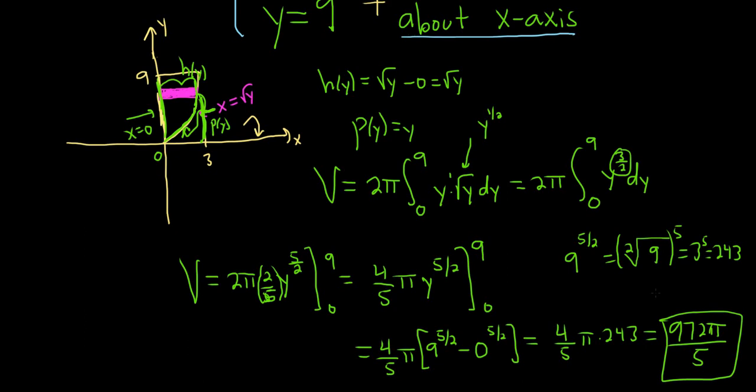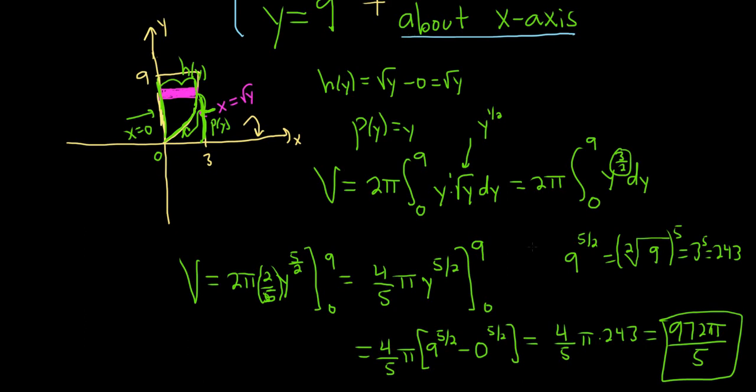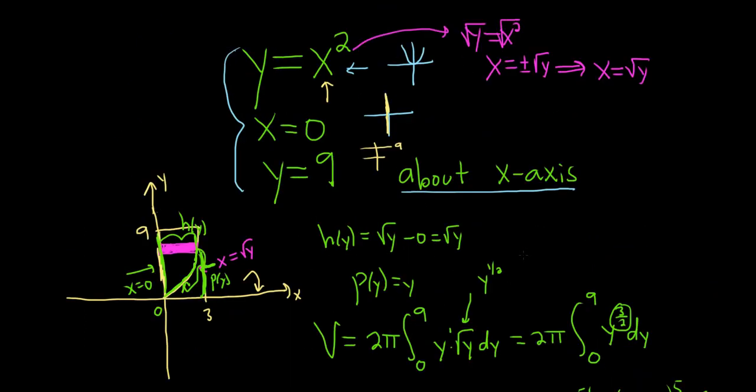And the hardest thing about this problem is that we have functions of y. Just remember, it's always right minus left whenever you're trying to figure out the h. And it's a horizontal rectangle. That's it.